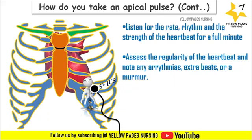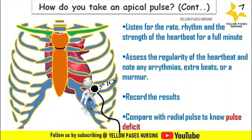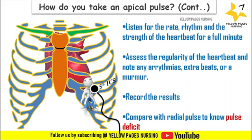After the procedure, make the patient comfortable and record the heart rate and any abnormalities in the patient's medical chart. Compare this with the radial pulse to determine the pulse deficit. During this procedure, two nurses may sometimes be involved — one checking the radial pulse while the other assesses the apical pulse.